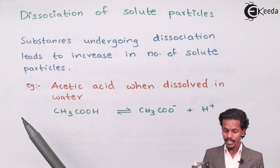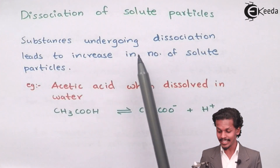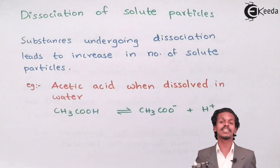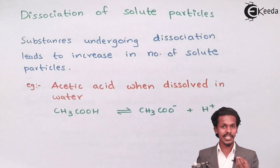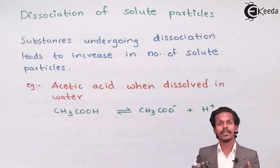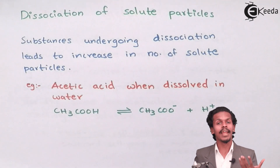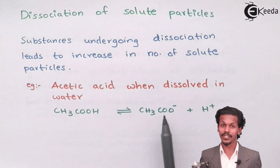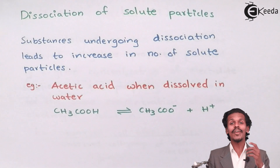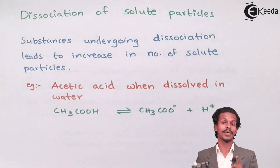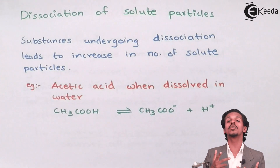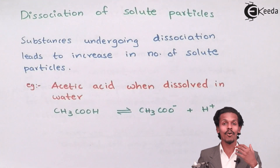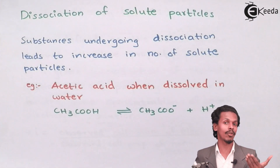Substances undergoing dissociation lead to an increase in the number of solute particles. For example, acetic acid when dissolved in water dissociates into two particles: CH₃COO⁻, which is the acetate ion, and H⁺ ion. So you have taken only one mole of acetic acid, but this one mole of acetic acid has been converted into two moles of particles. Therefore, the number of particles has increased, and so the osmotic pressure will also increase as the number of particles increases.